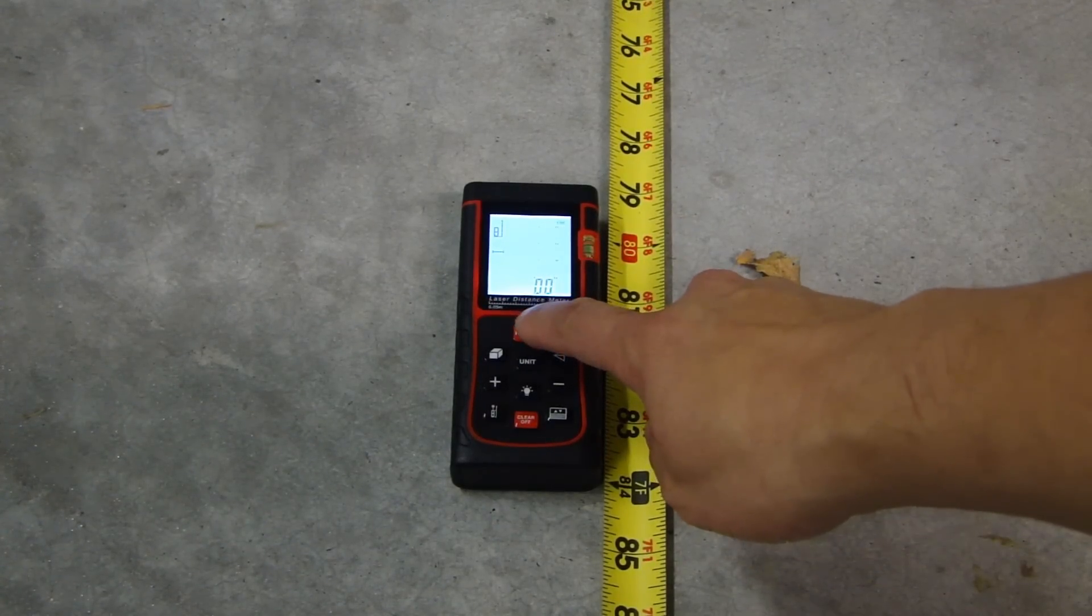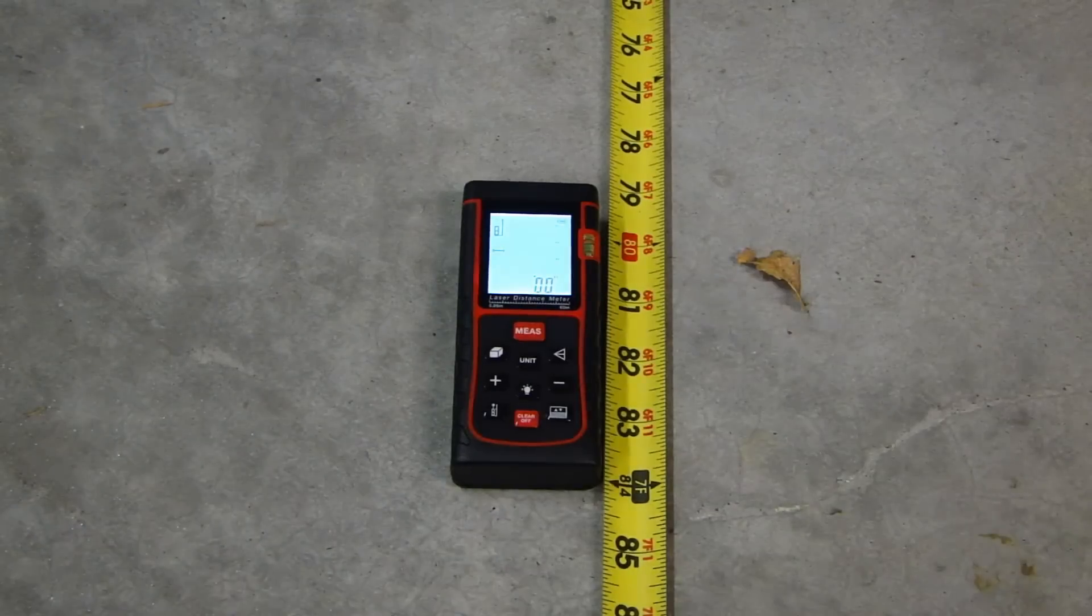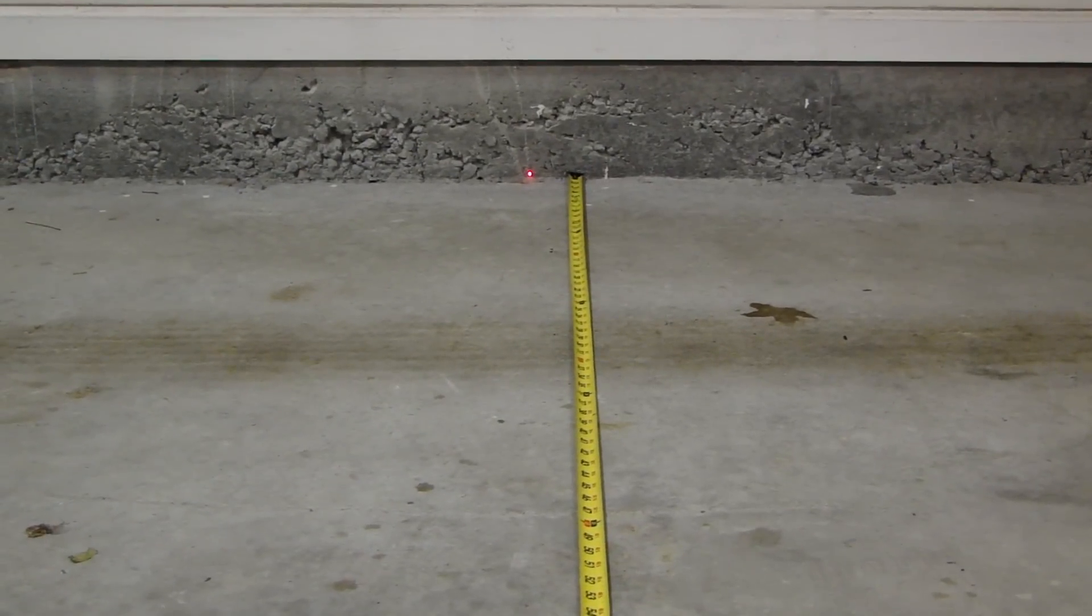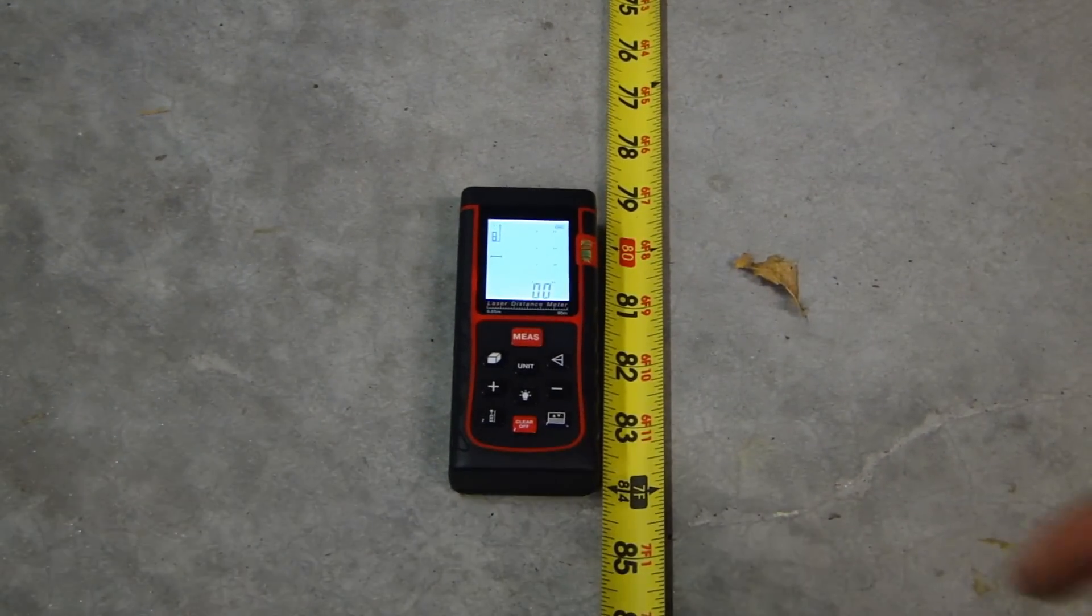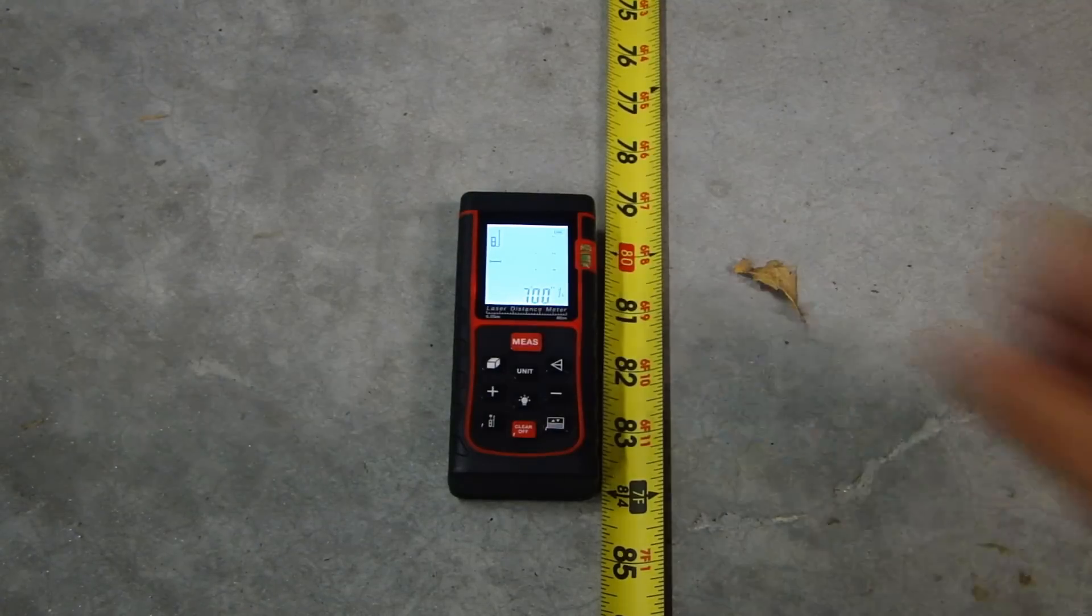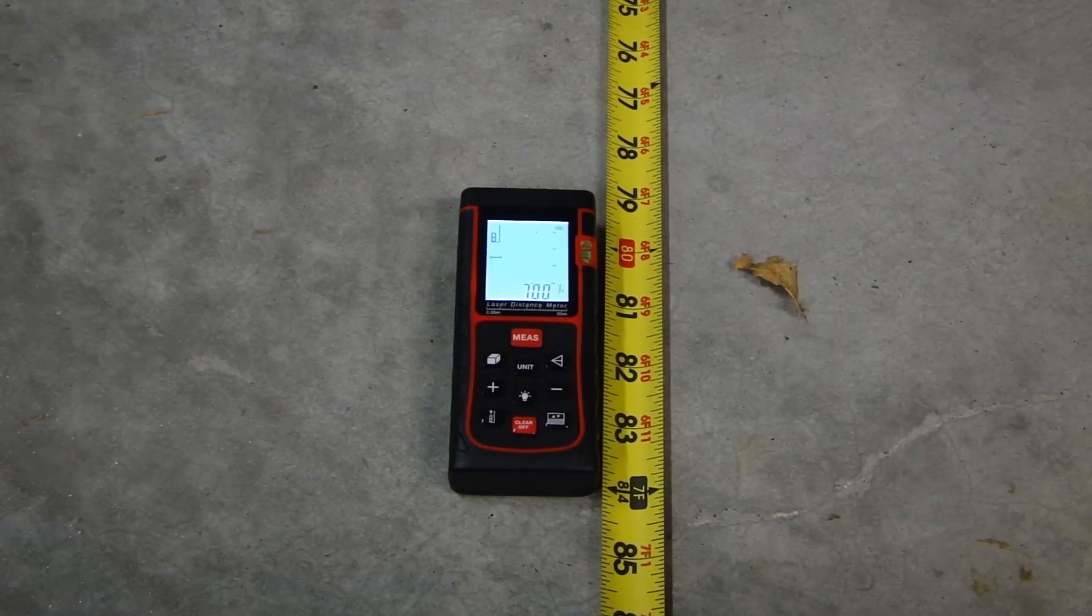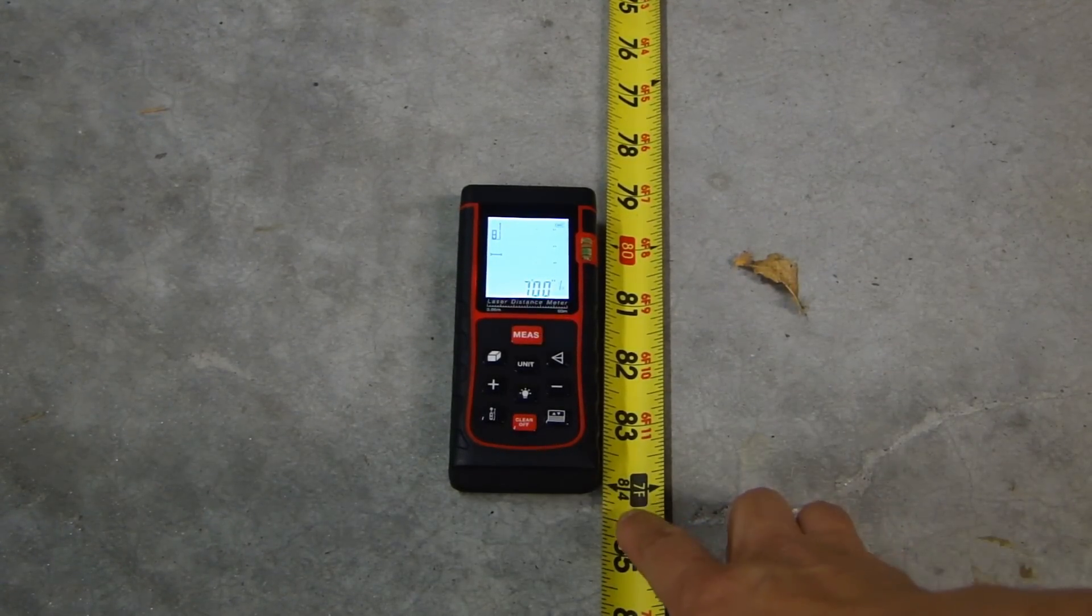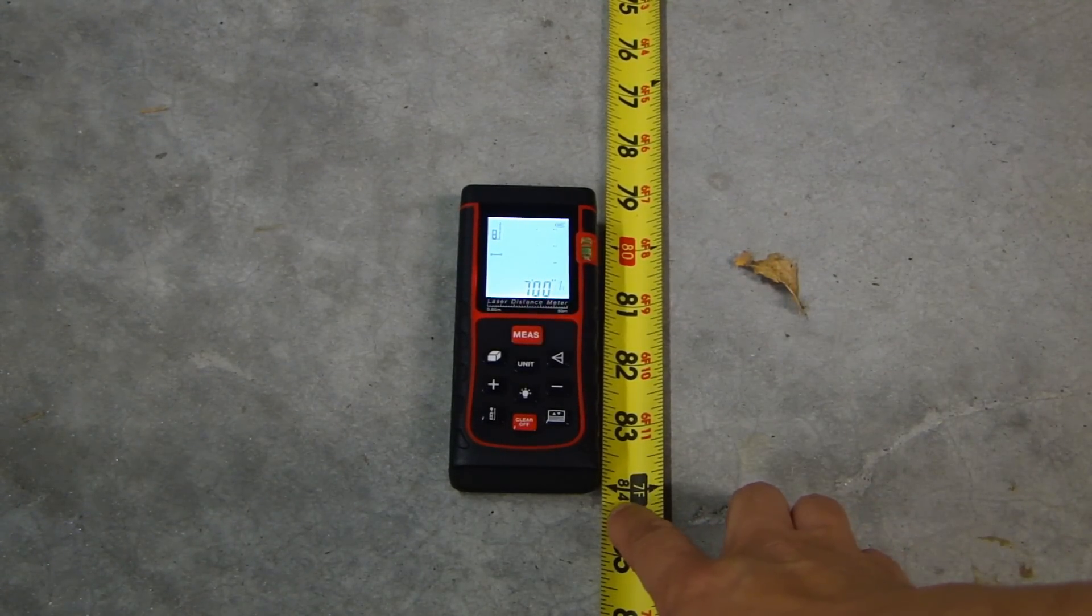To start the measurement, press the measure once and what that will do is that will turn on the laser beam that you see right there. Now press it a second time to actually do the measurement. And that's measuring seven feet. And on my tape measure that's exactly seven feet.